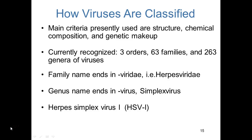Viruses are classified very differently from bacteria and other living organisms. The major criteria are structure, chemical composition, and genetic makeup. Because viruses don't sexually reproduce and aren't living, classification based on phylogenetics is much more difficult. Currently, we recognize three orders, 63 families, and 263 genera of viruses.